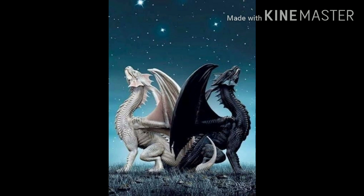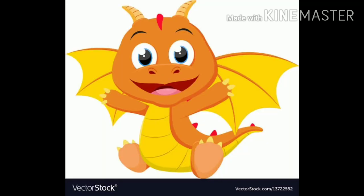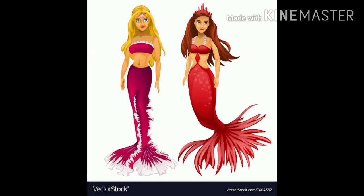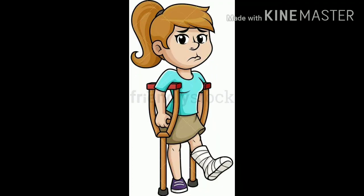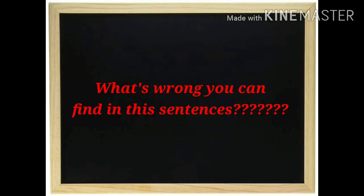Coming to our next lesson — see this image. For example: two dragons had four wings, and this dragon had two eyes. There were two princesses in this image. She walked with two crutch. After listening to all the sentences, what is wrong? Can you find the errors in these sentences, children?